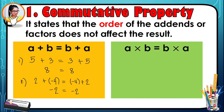Commutative property also applies to multiplication: a times b is equal to b times a. For example, with a equal to four and b equal to three, four times three equals three times four. Four times three gives twelve, and three times four also gives twelve. The order of the factors does not affect the product.